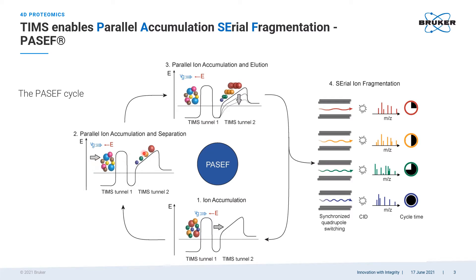In step two, we transfer the first batch of ions over to TIMS-Tunnel 2, which we call our separation region. Ions continue to be accumulated and trapped in the accumulation region, while in the separation region they're trapped by a field gradient. Ions with the largest collision cross-section get pushed furthest up that hill by the gas flow, and the smallest ones stay back towards the beginning. In the third step, we start to elute those ions — this sorting by size takes just milliseconds — and over the next 100 milliseconds we elute the ions by dropping the potential slowly. From the potential at which they elute, we can calculate their collision cross-sections, and we measure their masses with high mass accuracy and excellent resolution of a Q-TOF analyzer.